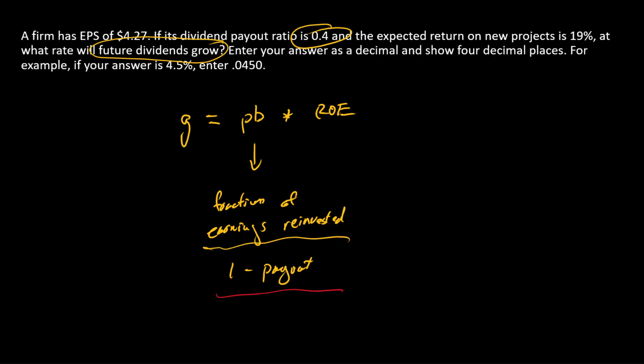So here we have a payout ratio of 0.4. So what is our plowback ratio? So here our plowback ratio is 0.6.